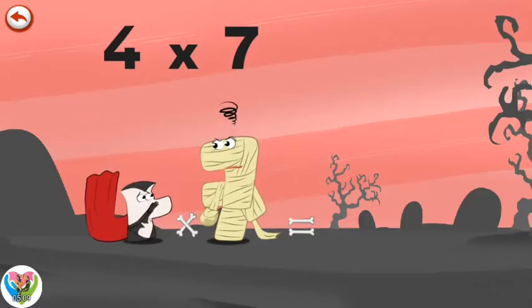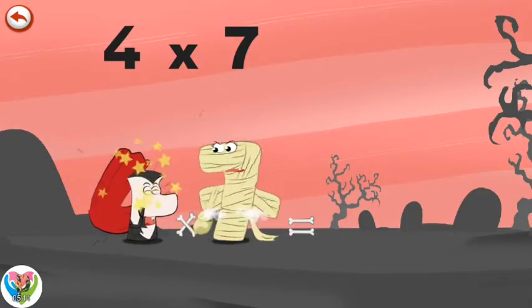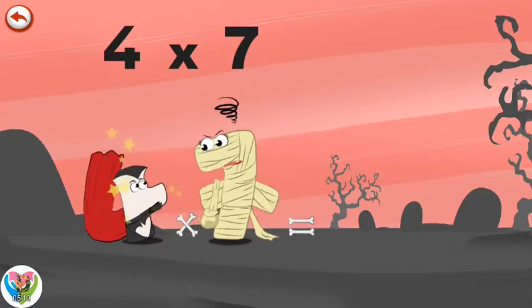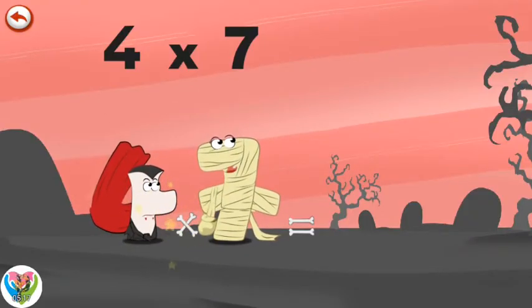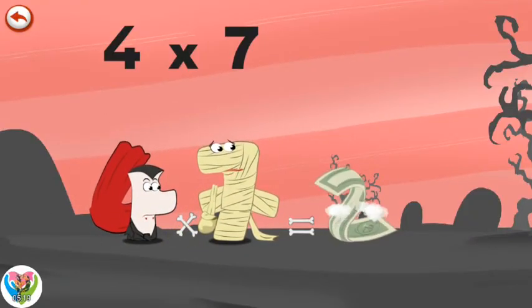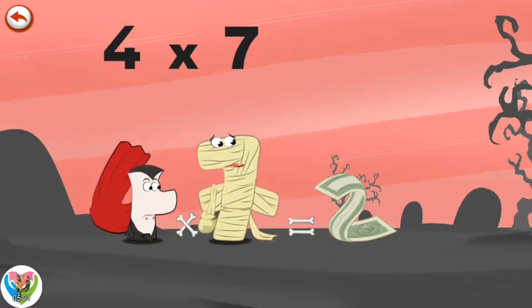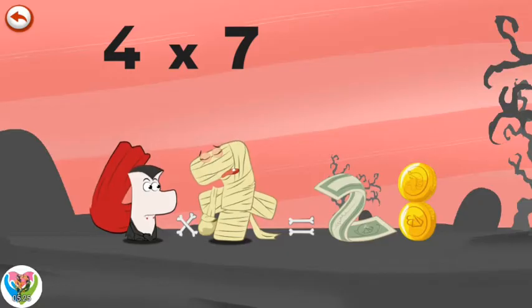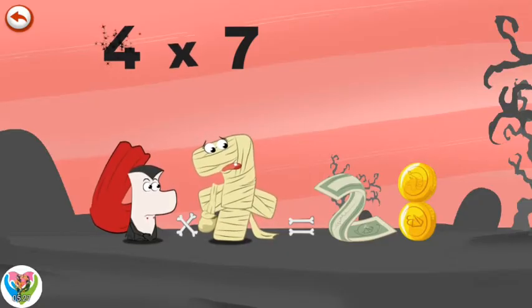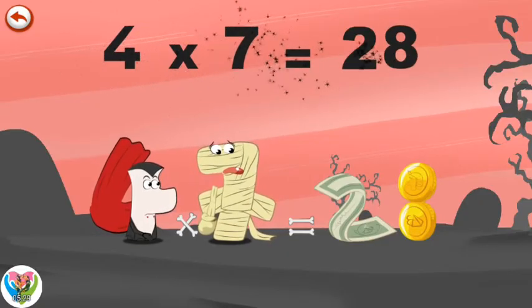She rears up and hits Vamp 4 on the head, spilling everything in her bag. A fine banknote in the shape of a two, and several coins which pile up in the shape of an eight. We have an economic issue. Four times seven is twenty-eight.